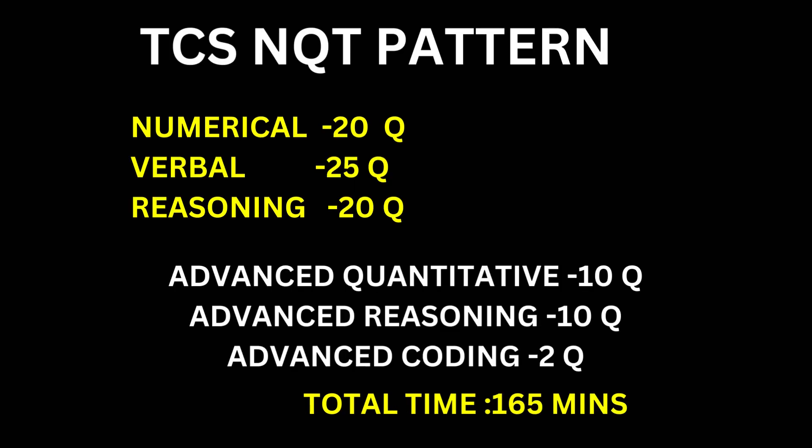Let's get into the pattern. For the NQT, the foundation section includes 20 numerical questions, 25 verbal questions, and 20 reasoning questions. In the advanced section, you will have 10 advanced quantitative questions, 10 advanced reasoning questions, and 2 advanced coding questions. The total time given for the exam is 165 minutes.